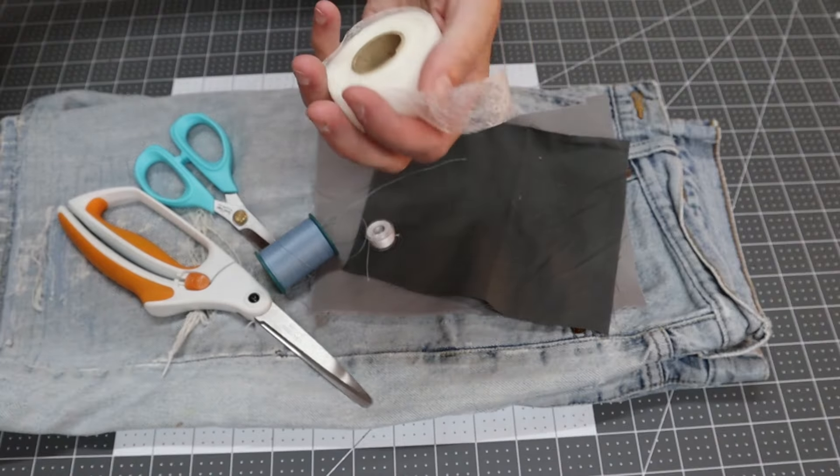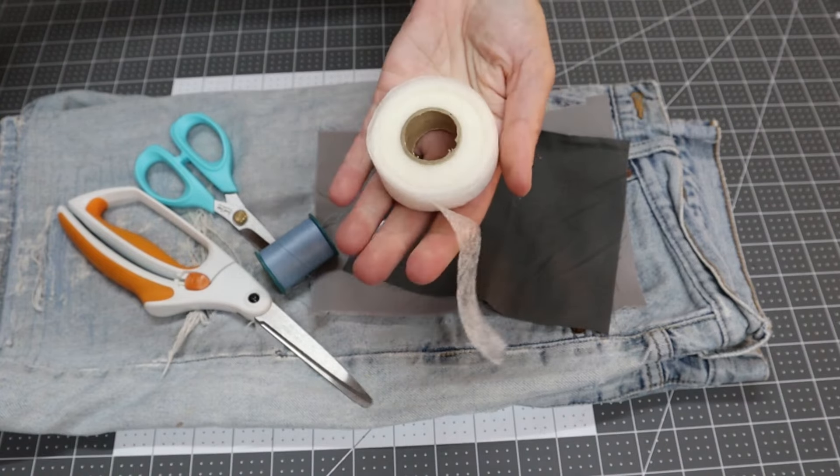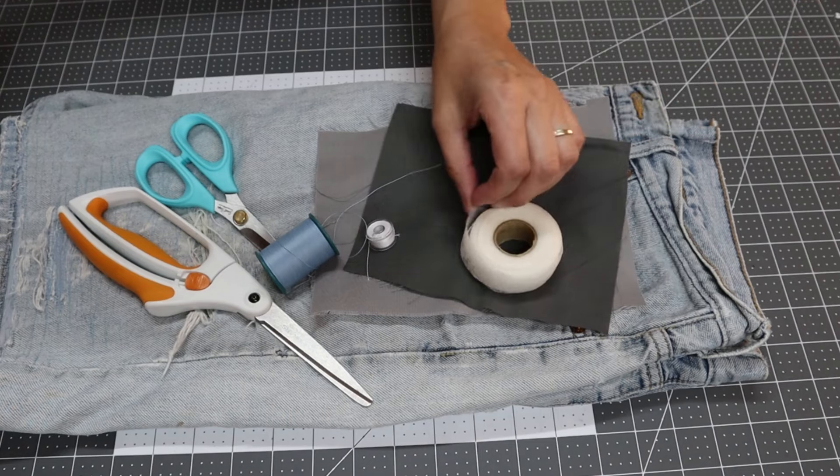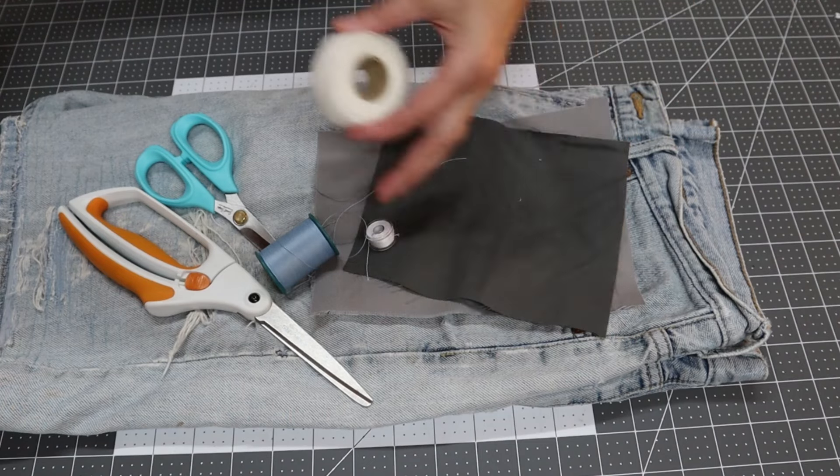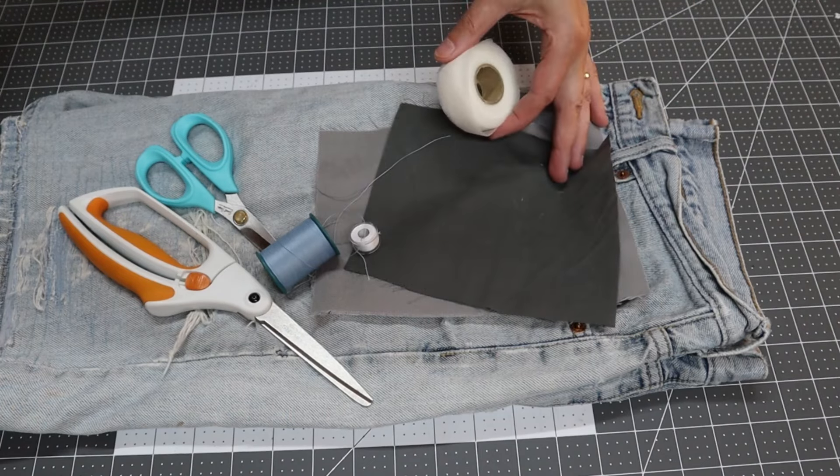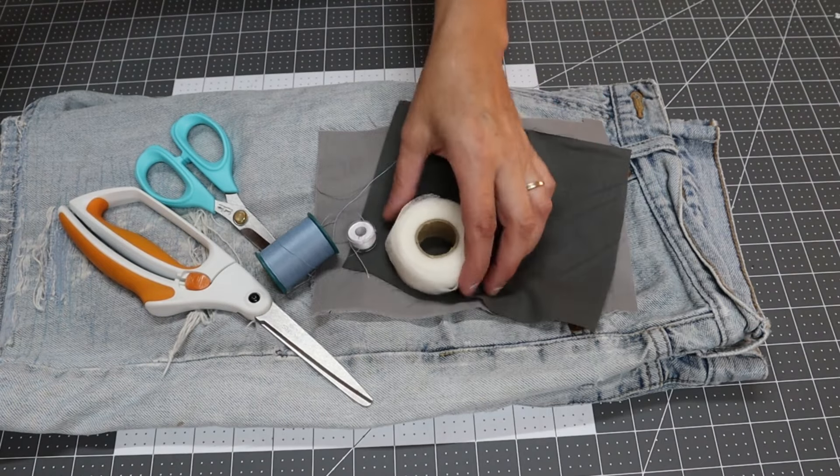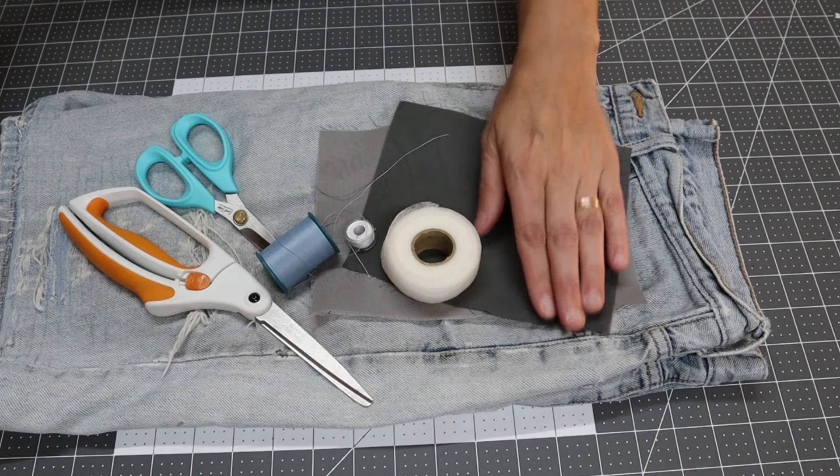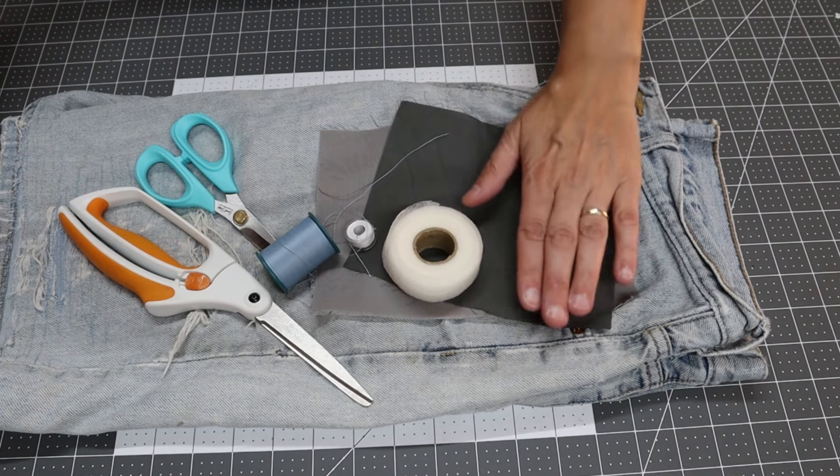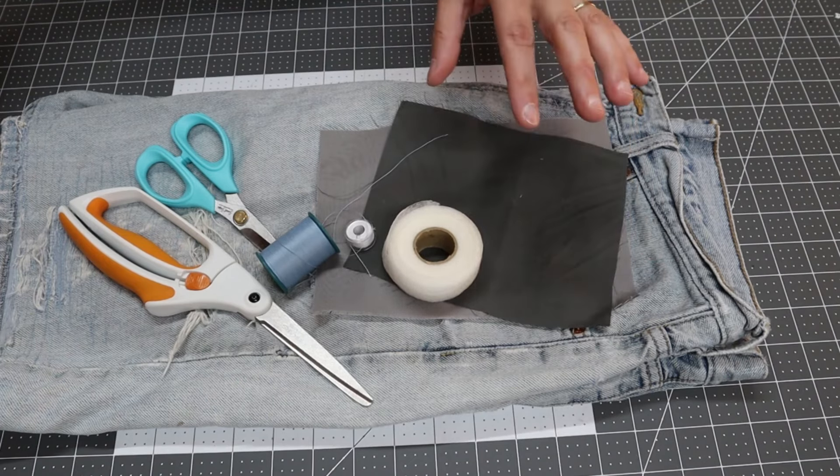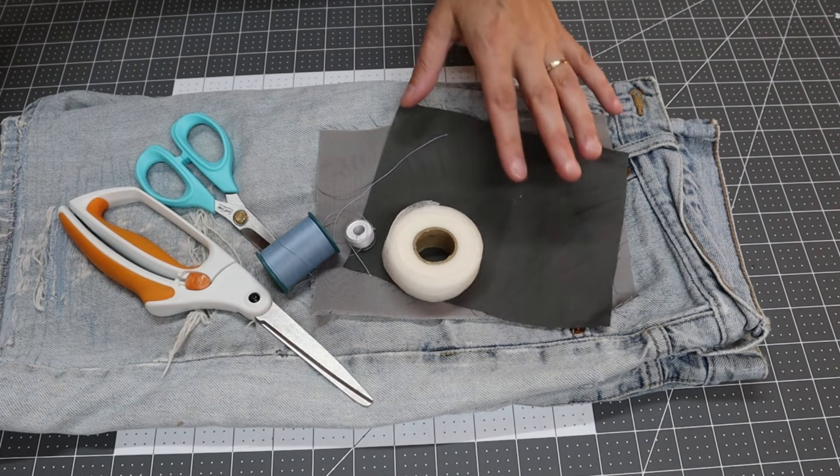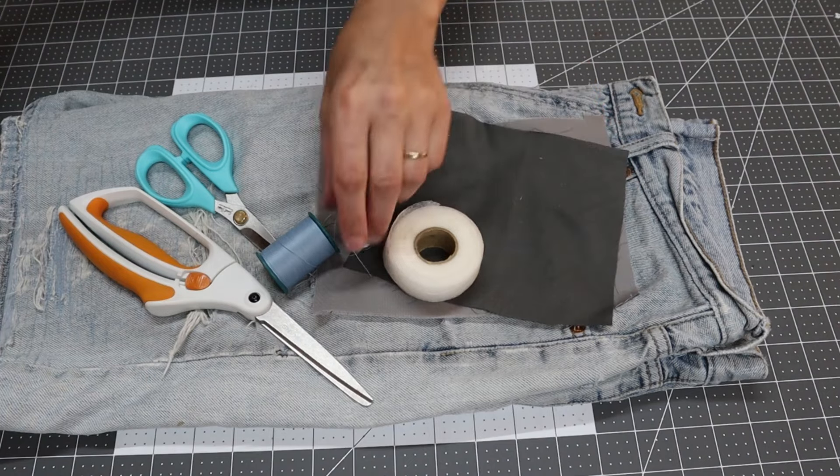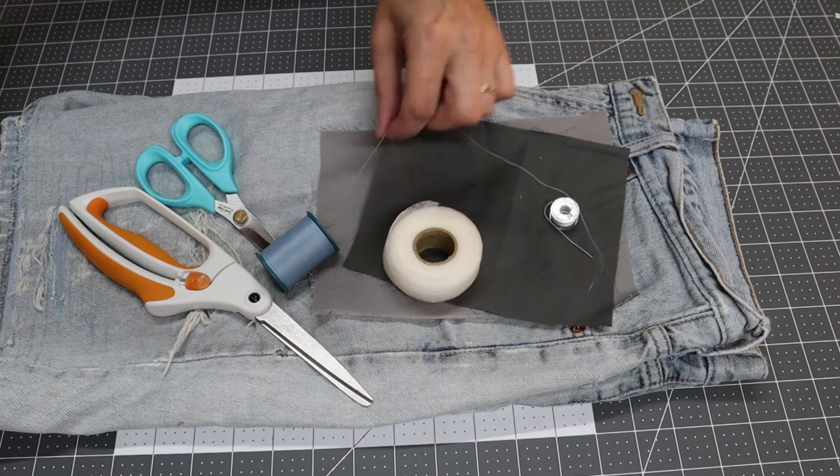You're going to want to use a little bit of fusible web. You can buy this in these little rolls, or you can buy it by the yard. We only need to rip off a few pieces of this just to get the patch to stick down initially to make it easier to sew.